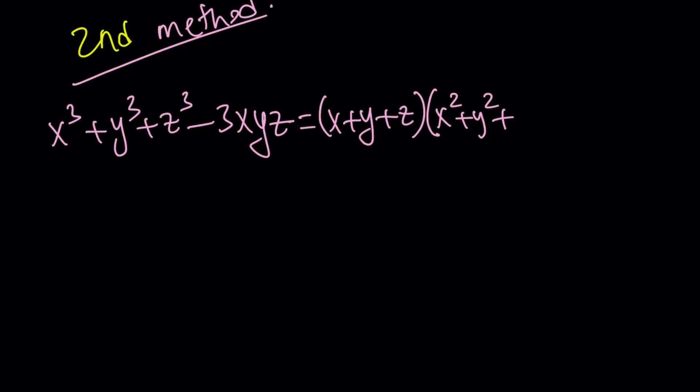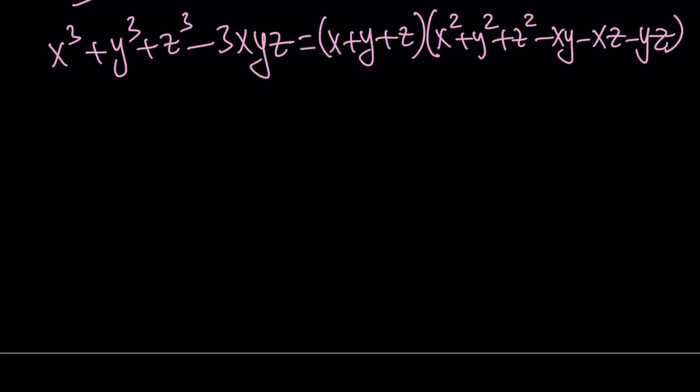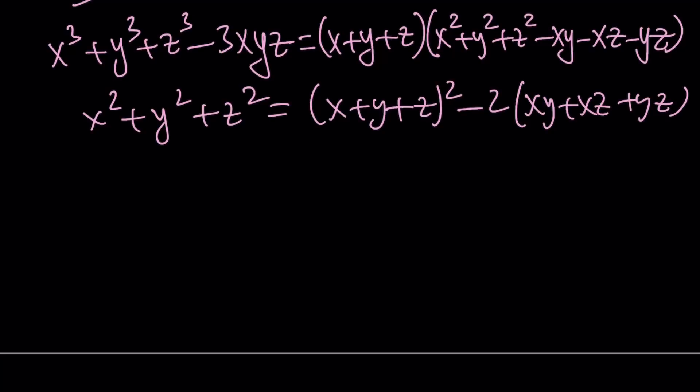x squared plus y squared plus z squared minus x, y minus x, z minus y, z. Now, from here, we also know that x squared plus y squared plus z squared is 9. Let me just use the result from the first method. I hope you don't mind. But you can also write this as this squared minus 2 times x, y plus x, z plus y, z. So you could also verify one more time that this is going to be 1 plus 8, which is 9.